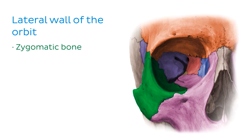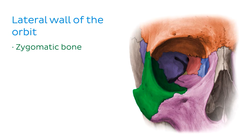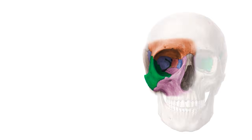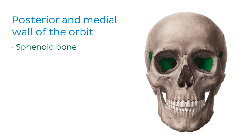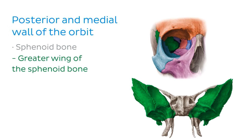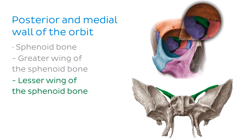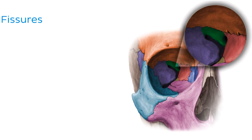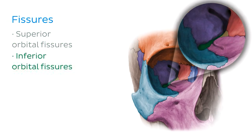Our next bone of interest was the zygomatic bone, or the cheekbone, another bilateral bone of the facial skeleton. It contributes largely to the inferolateral part of the orbit via the inferolateral orbital margin and orbital surface. After looking at the three anterior bones of the orbit, we turned our attention towards the bones which make up the posterior and medial walls, beginning first with the sphenoid bone. We identified the greater wing of the sphenoid bone, specifically its orbital surface, which contributes to the posterior wall of the orbit. Just superior to the greater wing was the lesser wing, which can also be partially seen on the posterior orbital wall. We also identified two clefts or fissures known as the superior and inferior orbital fissures, found along the superior and inferior margins of the greater wing.